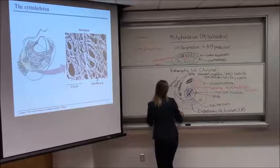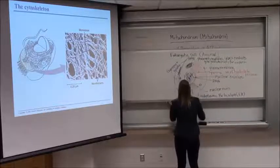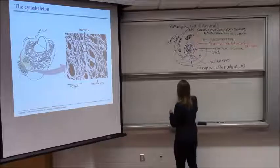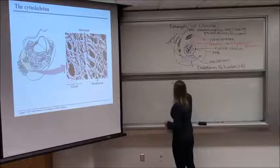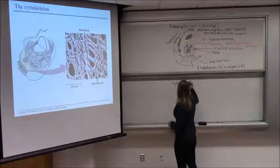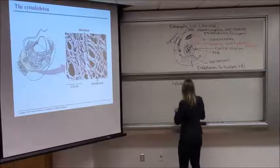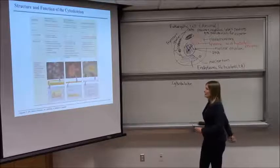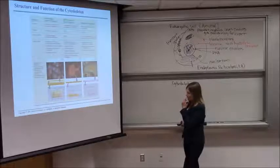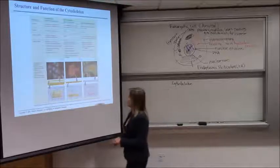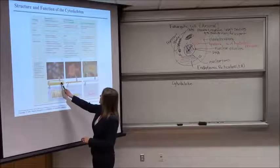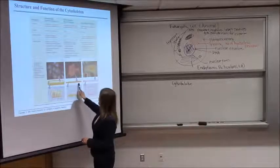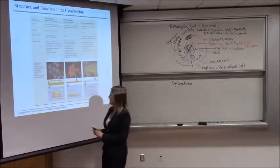Let me erase this whole endomembrane system. Cytoskeleton. The cytoskeleton is made up of several different elements, and you can see them on this chart. You can see we have what are called microtubules, microfilaments, and intermediate filaments.